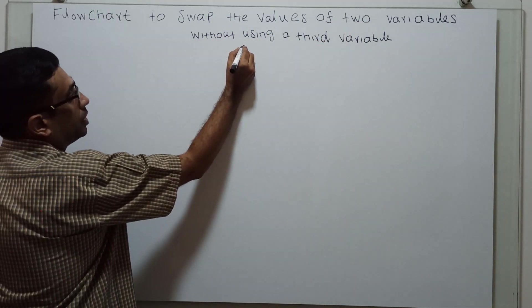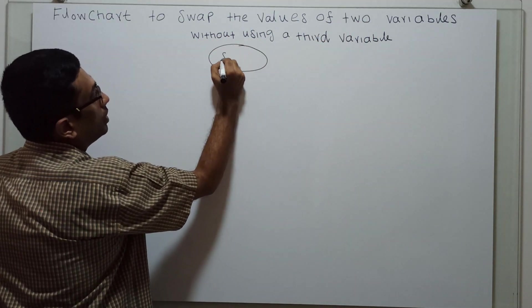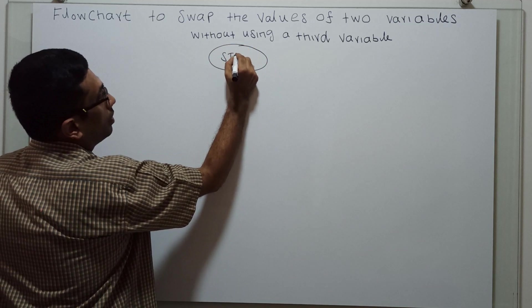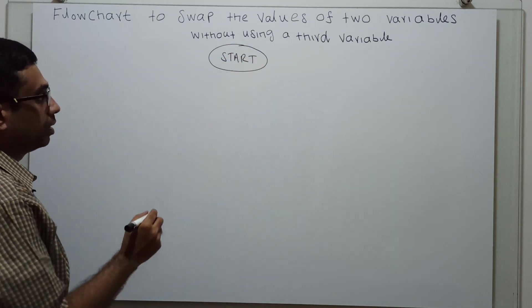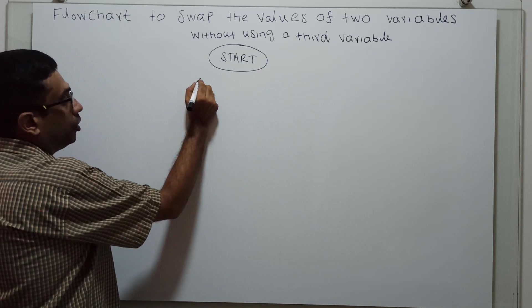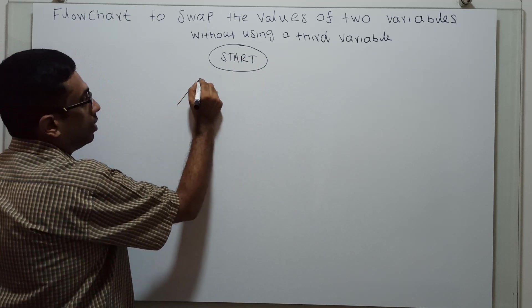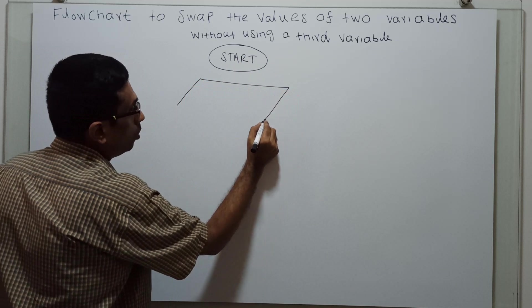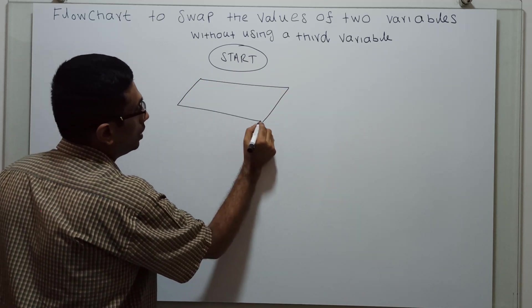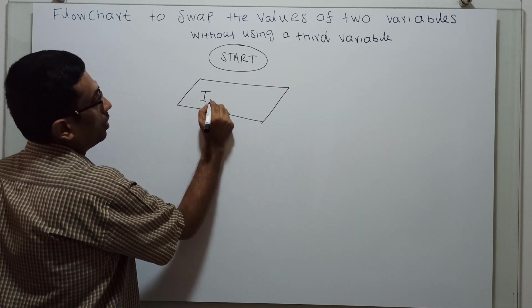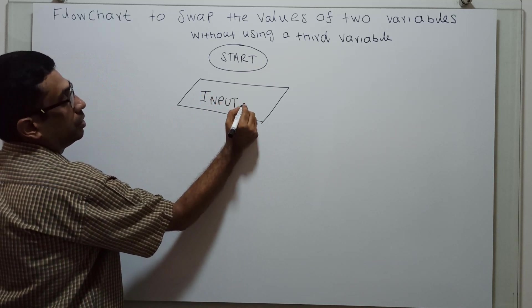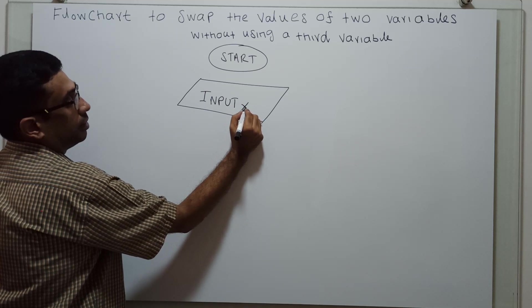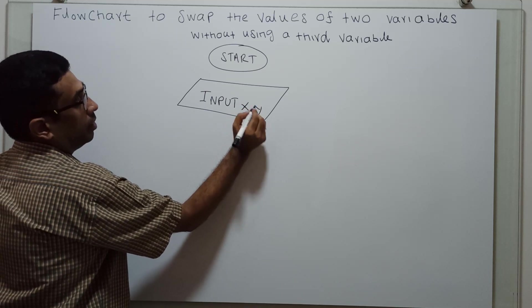So this is the logical start of the flowchart. Now I am going to obtain two values using the variables x and y: input x comma y.